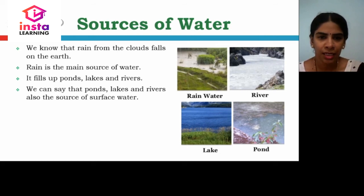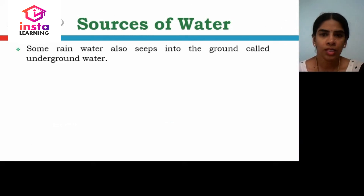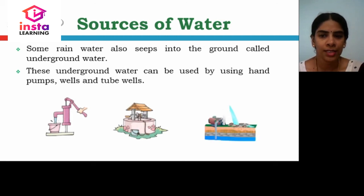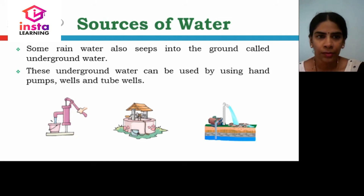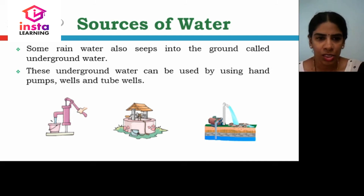What is the meaning of surface water? Some rain water seeps into the ground and is called underground water. The rain water which fills ponds, lakes and rivers is called surface water. Surface water can be used without any devices or equipment. But underground water can be used only by using devices such as hand pumps, wells and tube wells.